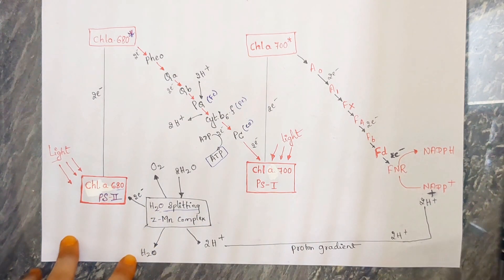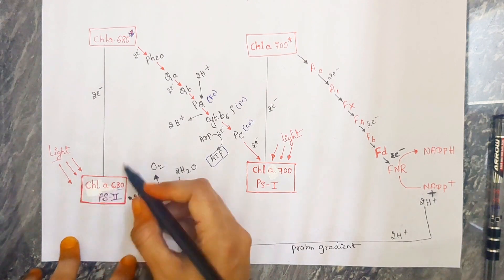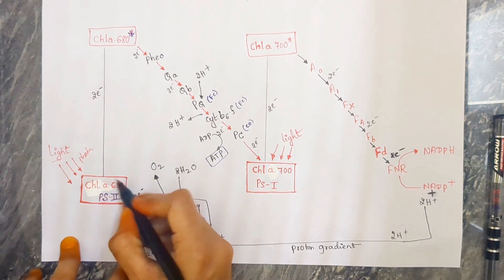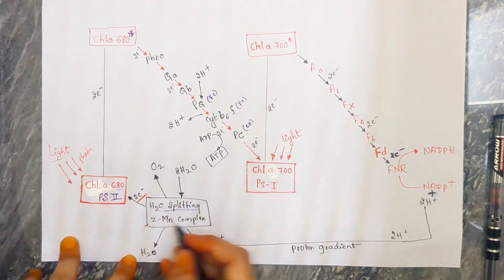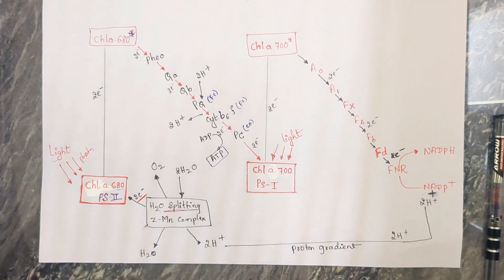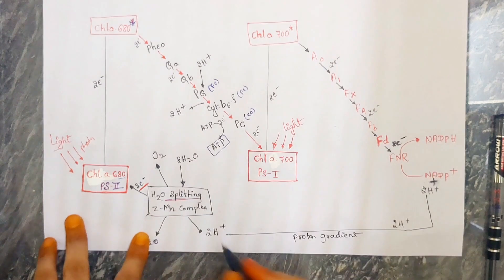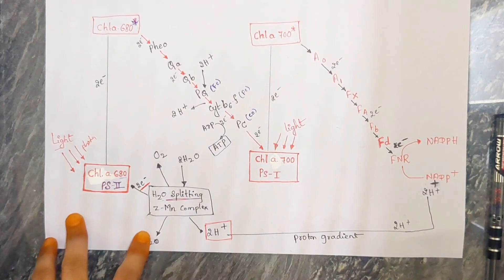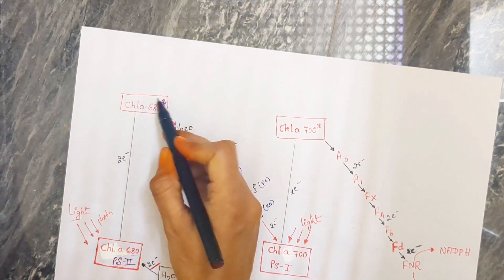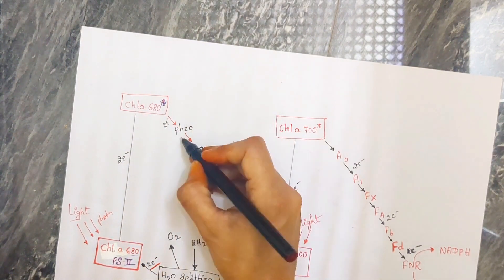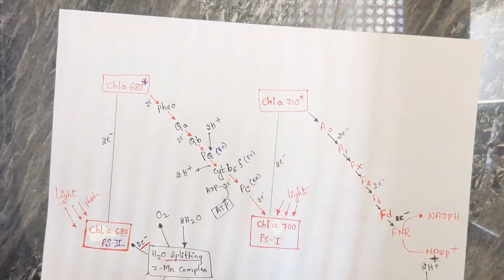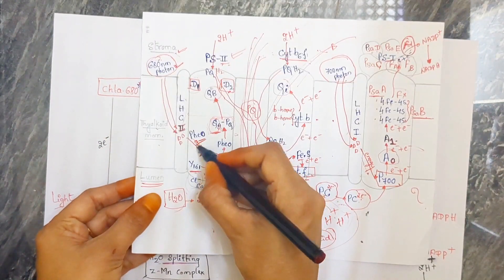This water gives two electrons. Light is only giving the photons to excite the chlorophyll molecule — electrons are given by the water here. The splitting of water gives two electrons and two hydrogen atoms. As two electrons are moving, this excited chlorophyll carries the two electrons and transfers them to the pheophytin, as you can see in the diagram.